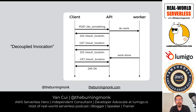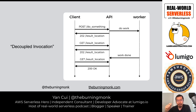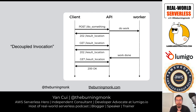A related pattern called 'decouple invocations' — formalized in the SOA patterns book — works like this: when an API accepts a request to do some work and the caller expects a response, instead of doing the work inline, you put it into a queue for background processing. But rather than returning nothing, you return a 202 with a Location header indicating where the result will be available. The client then polls that location periodically, receiving 202 responses with the Location header until the result is ready.